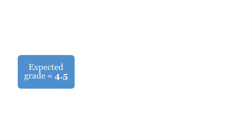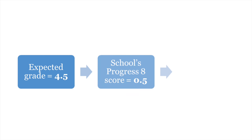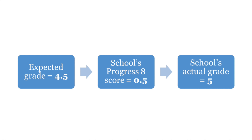So, let's say the pupils in a school had an expected average grade across all of their subjects of 4.5, which is halfway between a D and a C. If that school has a Progress 8 score of 0.5, that means the average grade for the school was 5, which is equivalent to a C.